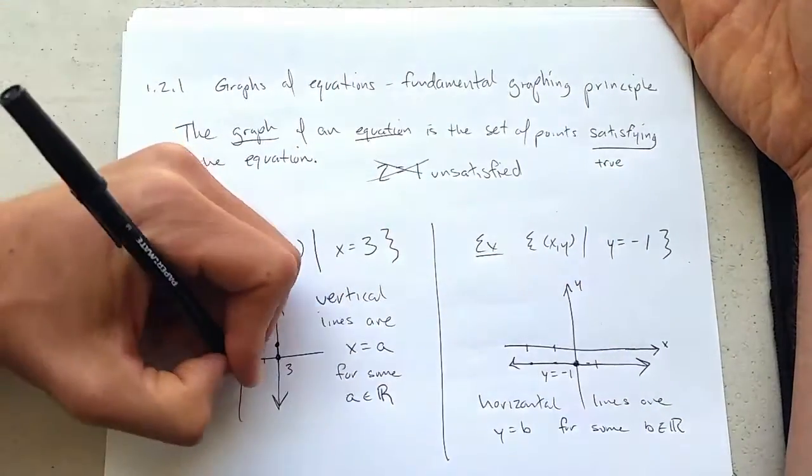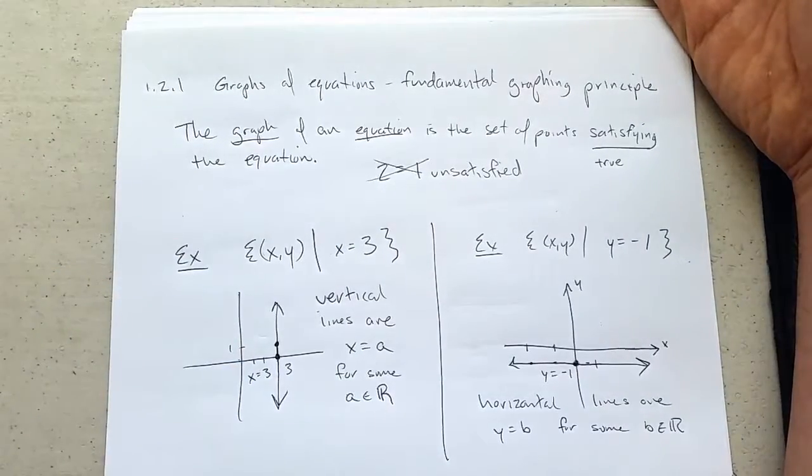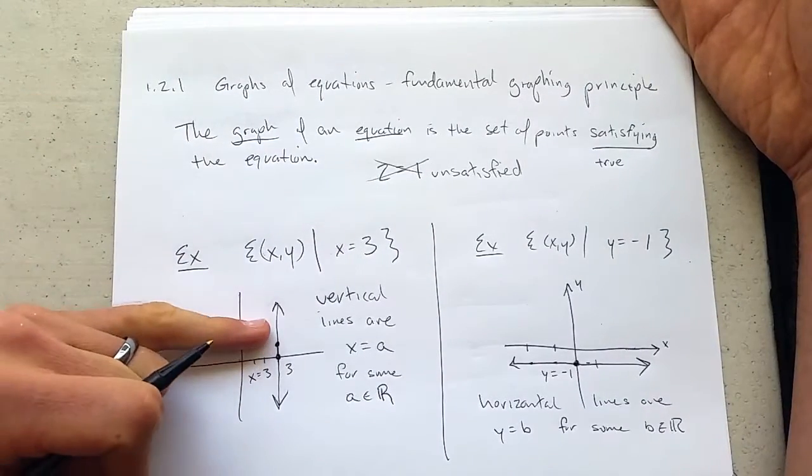You can label your y equals negative 1 line and your x equals 3 line so you can tell that they're lines and not some axis.